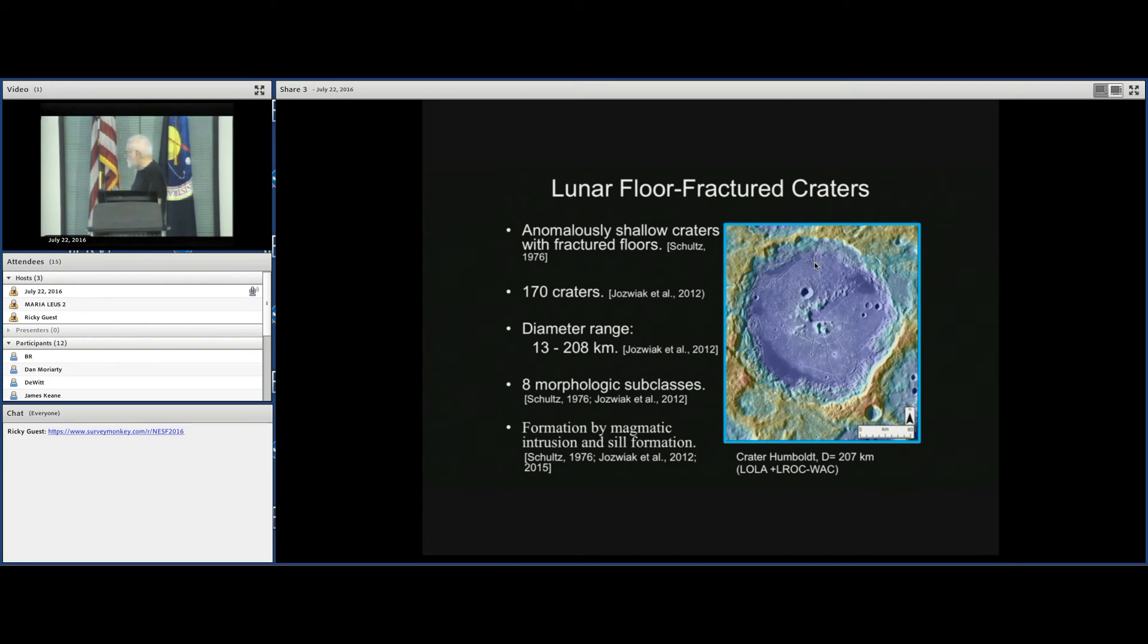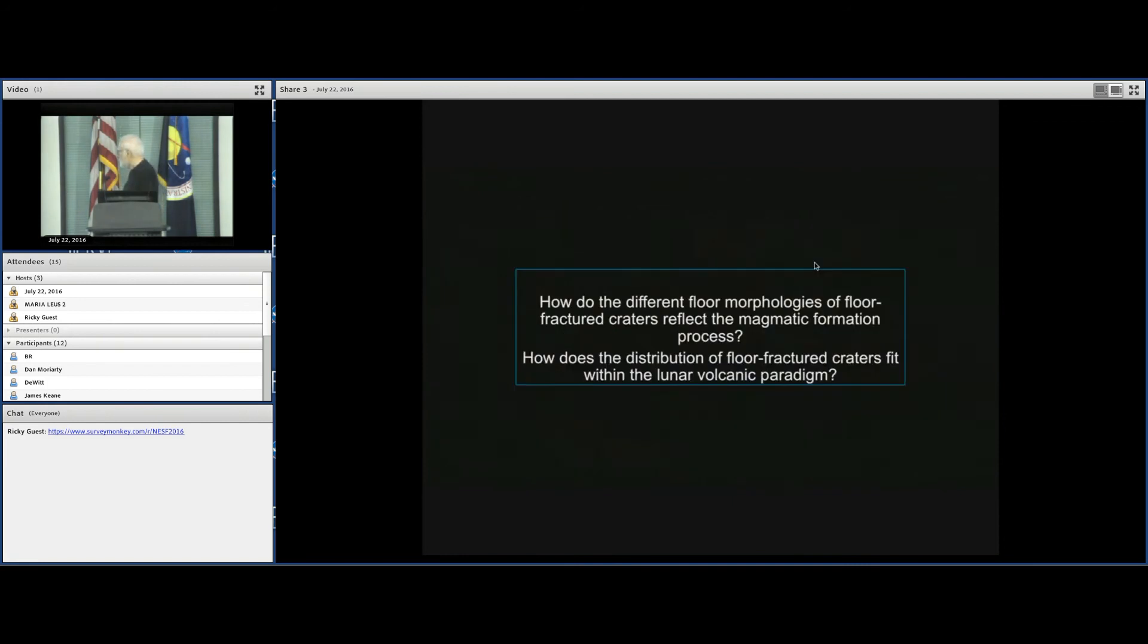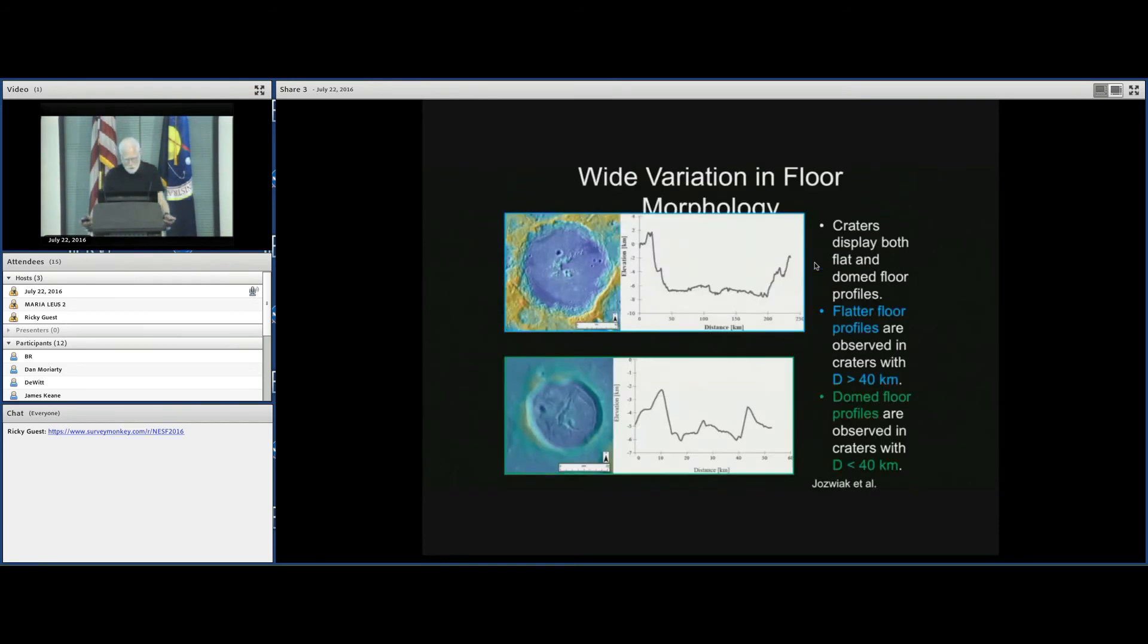There's eight morphological subclasses, mostly derived by Pete, but we updated that as well with the new data. And again, these hypotheses that I just mentioned, formation by magmatic intrusion and sill formation, and in both Pete's and in Lauren's papers, you'll see the documentation and the evidence for why this is the case. What she's been doing since then is studying the processes of emplacement and how that can be discerned from the characteristics of the morphology, the morphometry, and models for the evolution. So how do the different floor morphologies of floor fractured craters reflect the magmatic formation process? How does the distribution of these fit within the lunar volcanic paradigm? And we have data that we can use to test these with.